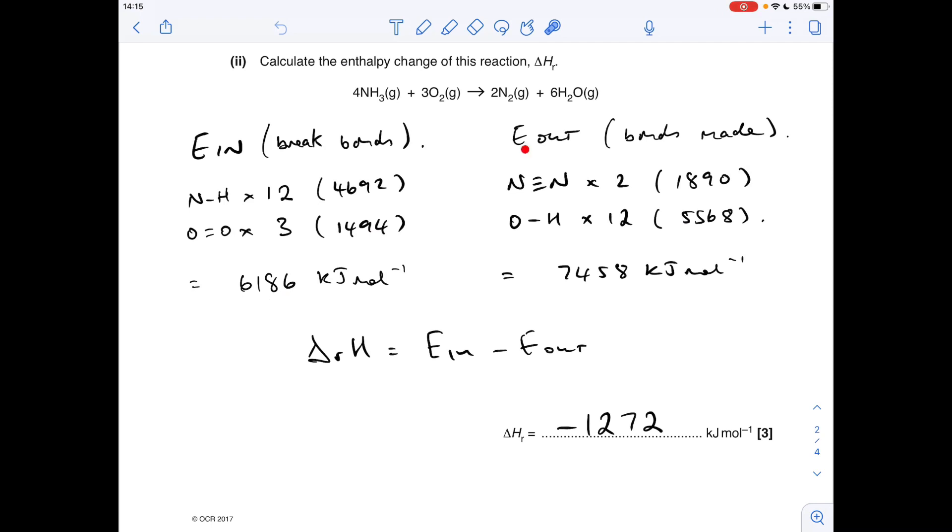And then moving on to the energy that's released, the energy that comes out when the bonds in the products are made. We've got two moles of N2, so that's two times the N≡N triple bond value, giving us 1890.